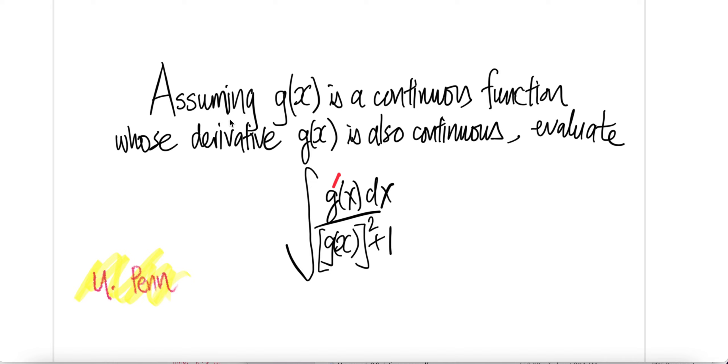Problem from UPenn. Assuming that g of x is a continuous function whose derivative g prime of x is also continuous, evaluate this.